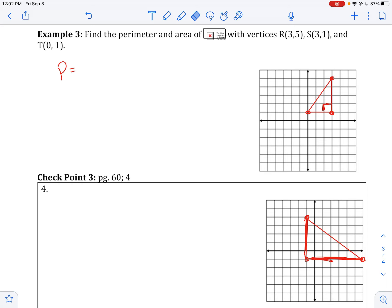So I need to find the perimeter and area of a triangle with vertices of 3,5; 3,1; and 0,1. So I've got it plotted out here.